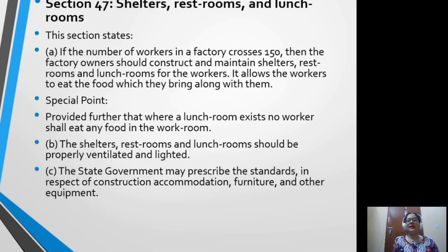Section 47 covers shelters, restrooms and lunchrooms. This section states that if the number of workers in a factory crosses 150, the factory owner should construct and maintain shelters, restrooms and lunchrooms for the workers, allowing workers to eat food which they bring along. Where a lunchroom exists, no worker shall eat any food in the workroom. The shelters, restrooms and lunchrooms should be properly ventilated and lighted, and the state government may prescribe standards in respect of construction, accommodation, furniture and other equipment.